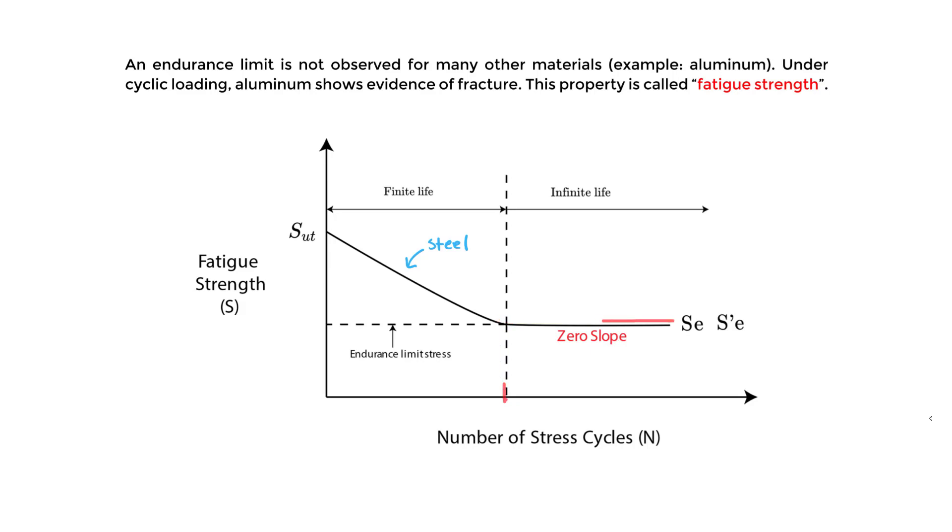Right at this point, we have a certain number of cycles - let's just say it's 10 to the 6th. We usually have a log scale on the x-axis and the strength on the y-axis. Let's say the number of cycles when we become flat, where we have a zero slope, is 10 to the 6th. This tells us that's the number of cycles where we reach the endurance limit. This is the endurance limit stress SE. From this point to the right, we have infinite life - we can keep loading this tension-compression for infinite life.